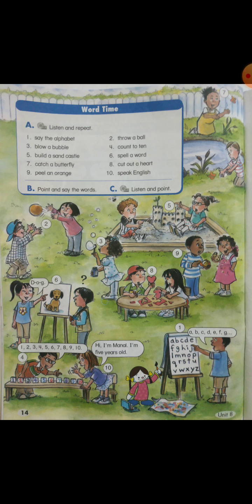Seven: catch a butterfly. Eight: cut out a heart. Nine: peel an orange. Ten: speak English.